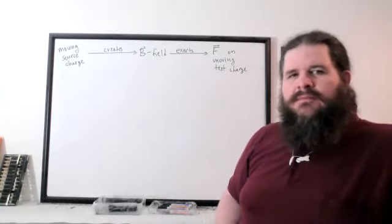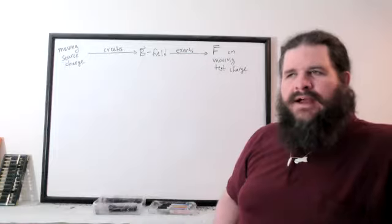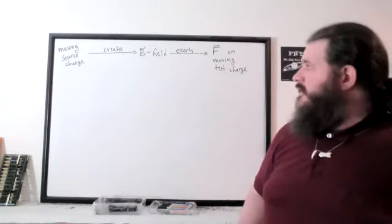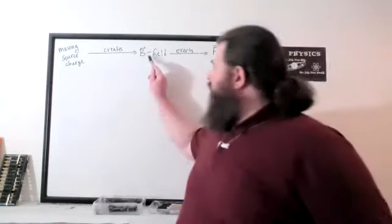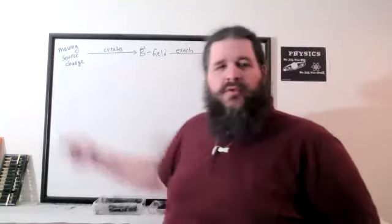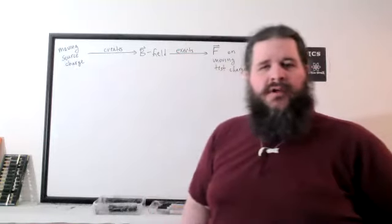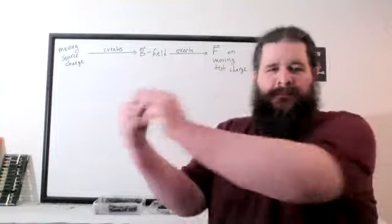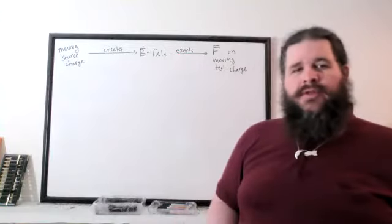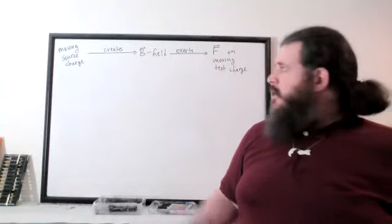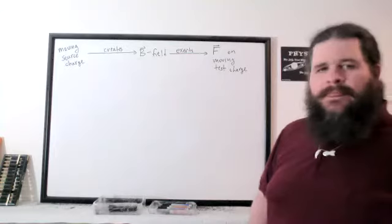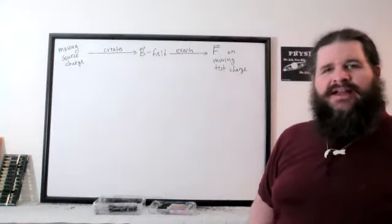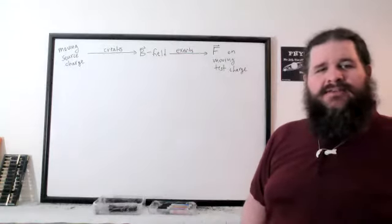The main outline of how we're thinking about magnetic fields is that the magnetic field is created by a moving source charge. Any moving charge, whether it's a lump of charge in motion or current flowing through a wire, creates magnetic fields, which can be thought of as invisible arrows around it in space.